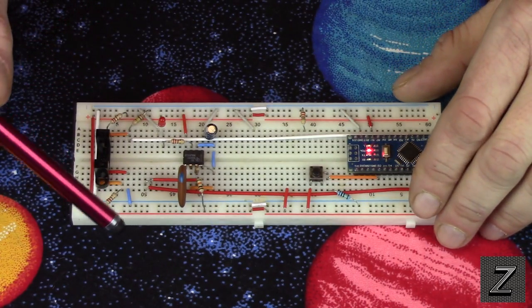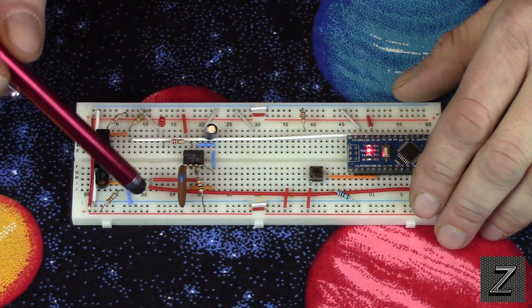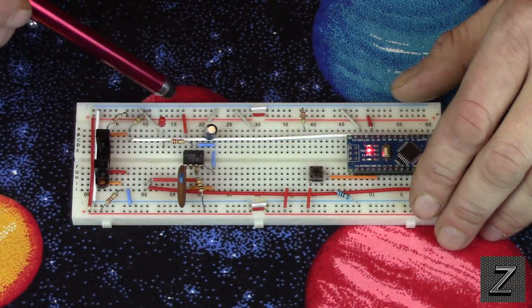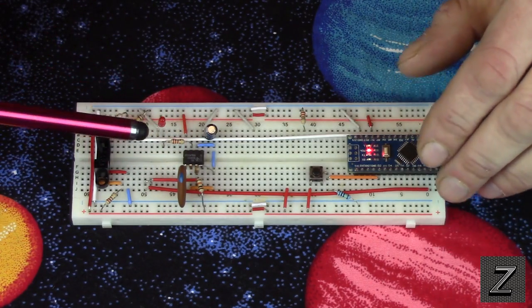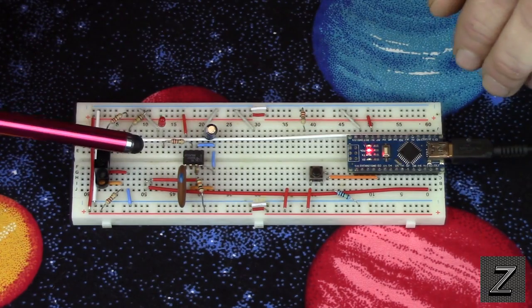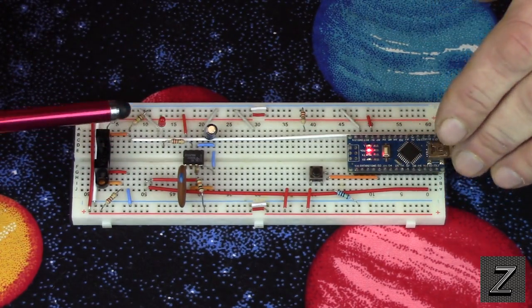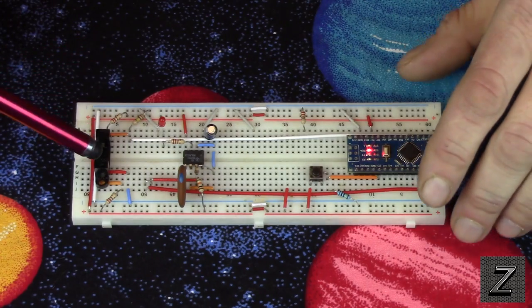And it doesn't take a whole lot of parts to set this up. We've got two different little capacitors and two resistors and then just a few jumper wires. That's how easy it is to set the circuit up.